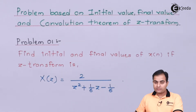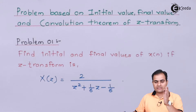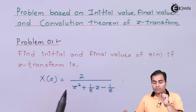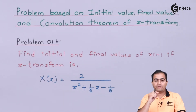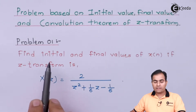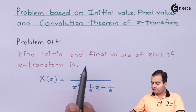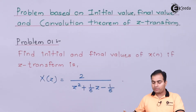Initial value means we are going to find the value of X(n) at n = 0, which is the start of the function — that is the initial value. For the final value, when n approaches infinity, we find the behavior or output of the function. So two values we are going to find: X(0) for the initial value and X(∞) for the final value.